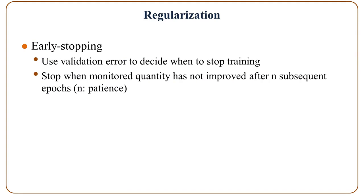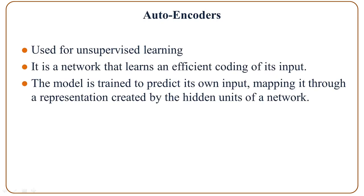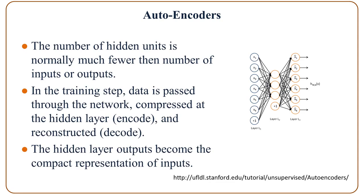When some monitored quantity has not improved after n subsequent epochs, training stops. An autoencoder is used for unsupervised learning — basically without the support of labels. It is a network that learns an efficient coding of the input. The model is trained to predict its own input, mapping it through a representation created by the hidden units. Usually the number of hidden units is much fewer than the number of inputs or outputs.